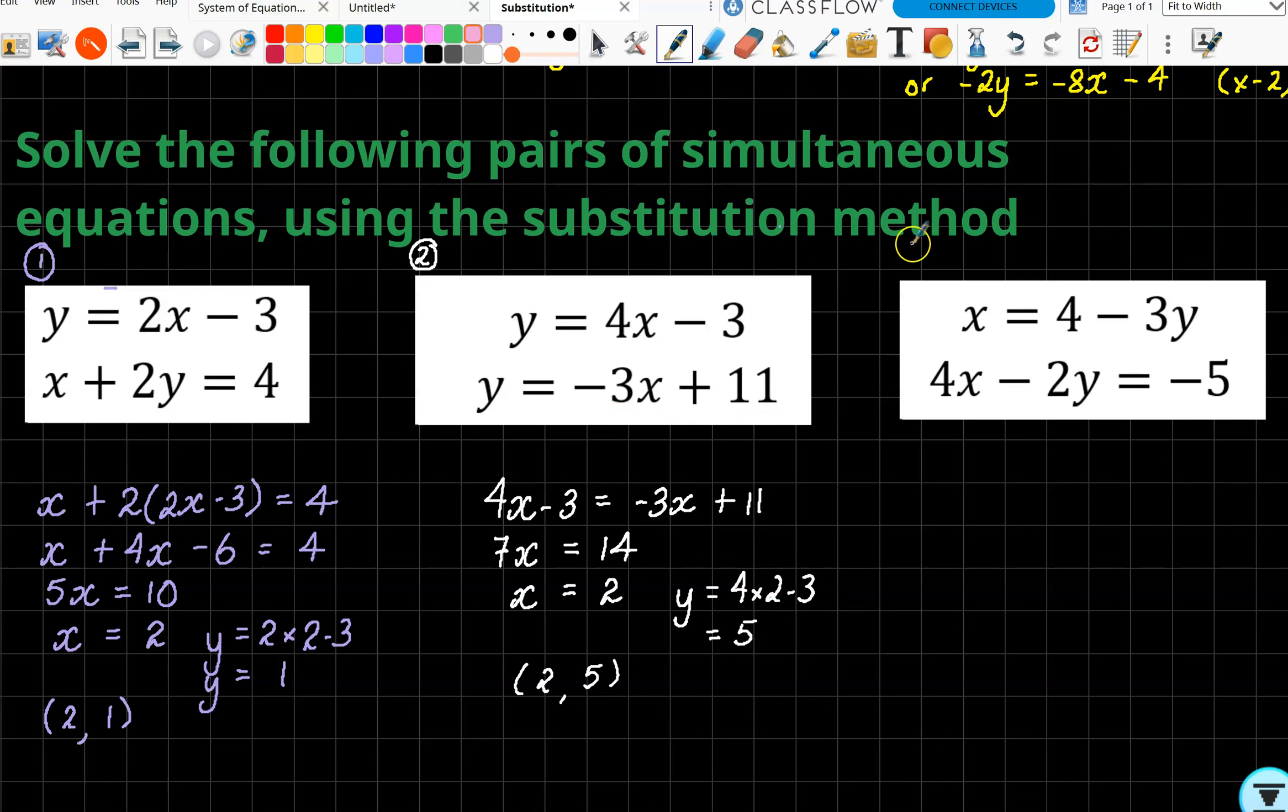We'll just finish off the very last one, number three. Hopefully we've got this substitution under control. We've tried to be tricky—instead of saying y equals, this time it's an x equals, but the same rules are going to apply. Now wherever x is here, we're going to substitute it with what we believe, or what we are told, x equals. So now instead of 4 times x, it's 4 times—what is x? x equals 4 - 3y.